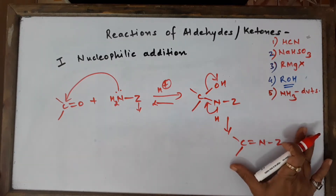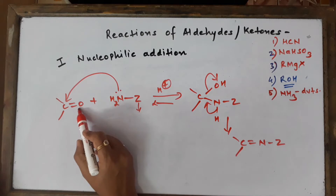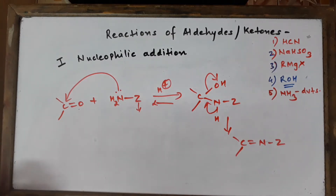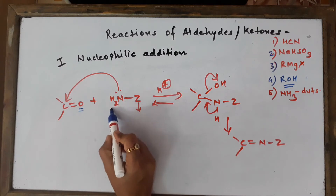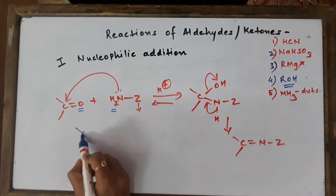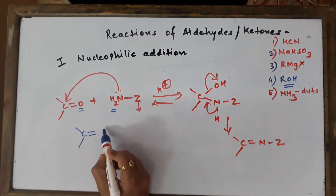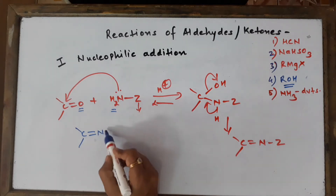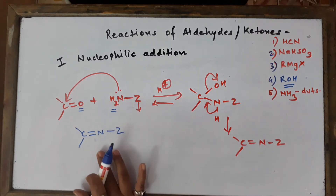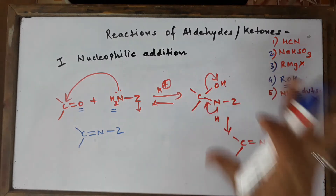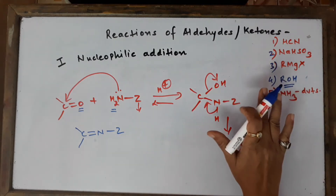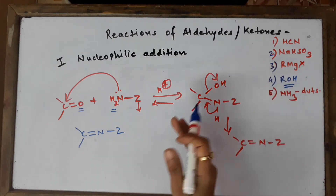Now let me show you quickly how to predict the products directly - it's very simple. You have to remove the oxygen from the carbonyl compound and remove the two hydrogens from the reagent, and the answer is straightforward. I'm going to show you various derivatives of ammonia now, and the mechanism is going to be exactly the same. You must know the names of all the reagents plus the names of the products they form.